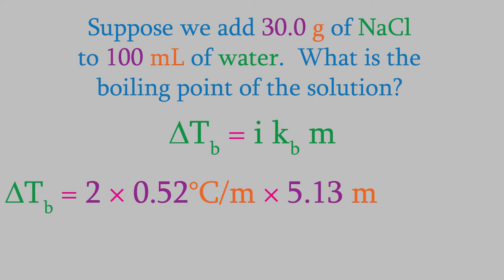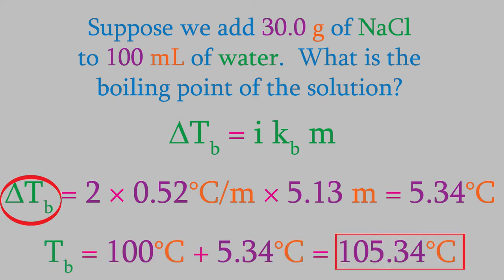We put that in the equation for boiling point depression, and that gives us a result of 5.34 degrees Celsius. But be careful. Just like last time, this is not the answer to our question. The question asked what the boiling point is, but we just calculated the change in the boiling point. So, the new boiling point is 5.34 degrees higher than it would be without a solute. Pure water has a boiling point of 100 Celsius, so with this amount of salt in it, the new boiling point will be 105.34 degrees.